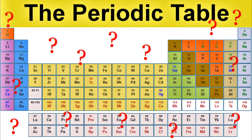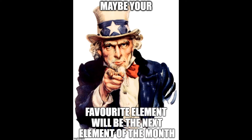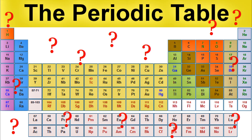Don't forget to vote for your favorite element in the monthly element contest down in the comment section — who knows, maybe your favorite element would be the next element of the month. Nobody votes for the element of the month anymore — nobody did in the first place, actually. Just find a periodic table nearby and choose a random element and submit it in the comment section. It's not that difficult, please.